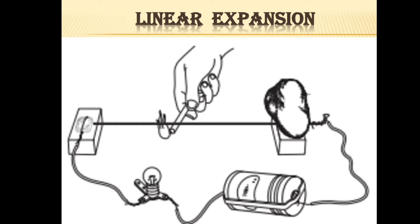Now light the candle and heat the spoke with it. After the spoke is heated for some time, the bulb lights up. This is because on heating, the cycle spoke expands and touches the coin, completing the circuit so the bulb glows. When the candle is taken away, the spoke cools down and contracts, so it no longer touches the coin and the bulb goes off. When heated, the cycle spoke expands, and when cooled, it contracts. This is an activity demonstrating linear expansion.